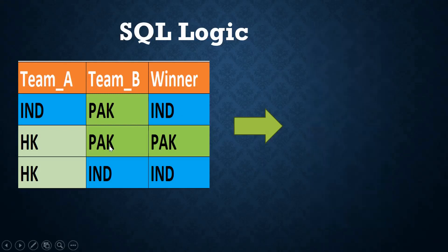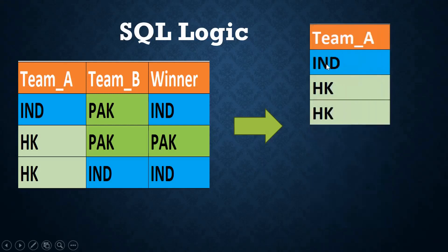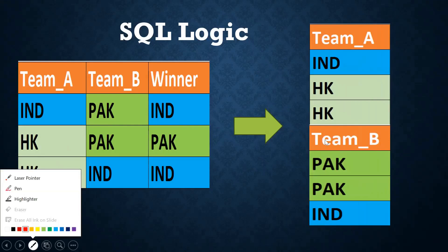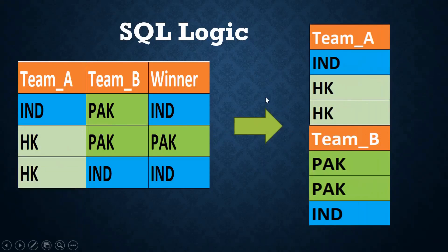So this is my input. I am taking the first column, team A — India, Hong Kong, Hong Kong. Then I am clubbing team B — Pakistan, Pakistan, India. To club two result sets, we should use the set operator union all. India played two matches, Hong Kong played two matches, and Pakistan played two matches.